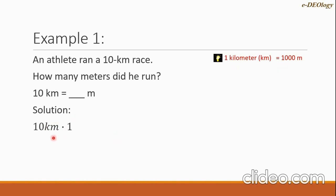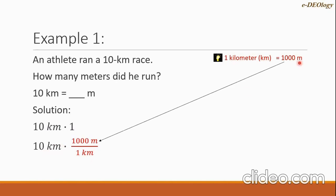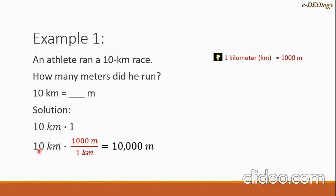We want to cancel the km unit, so we write this as a fraction with 1 km in the denominator — that way we can cancel the km here and the km in the denominator. The 1,000 meters goes in the numerator. We cancel the km units, then multiply 10 times 1,000, which equals 10,000 m. So the answer is: 10 kilometers equals 10,000 meters.